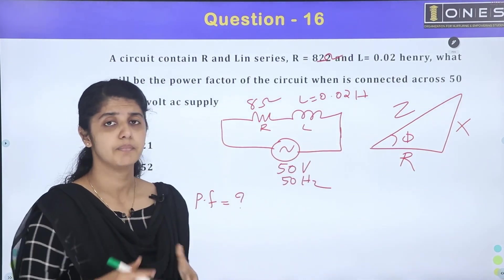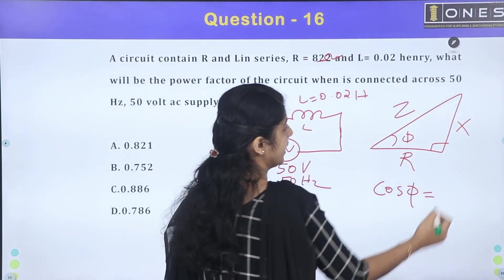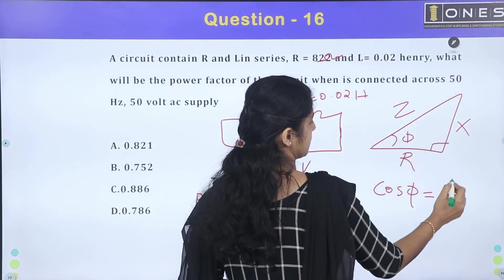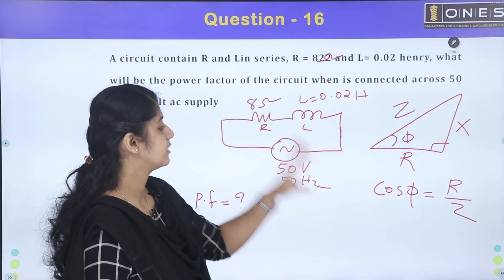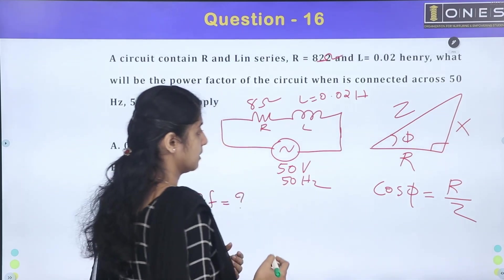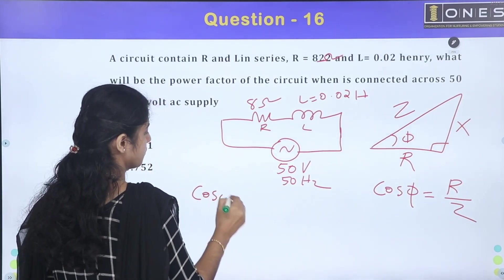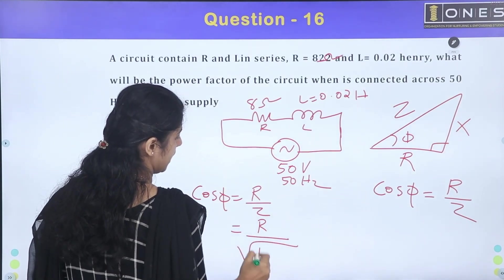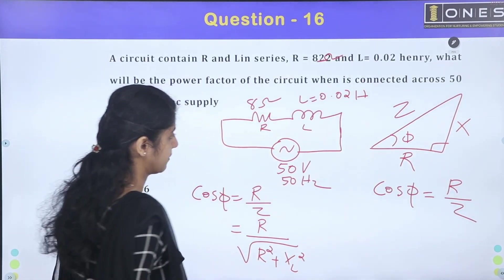Using the impedance triangle, the power factor is equal to R by Z, where Z is equal to the square root of R squared plus XL squared, and inductance reactance XL squared.